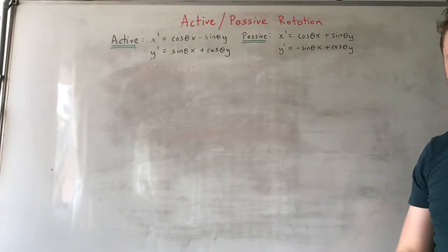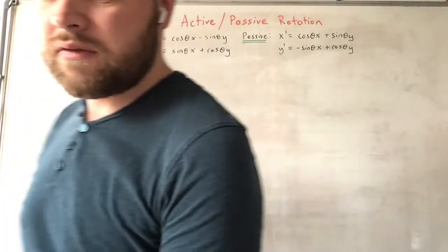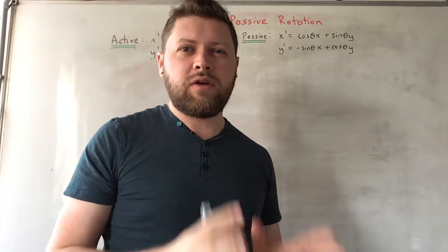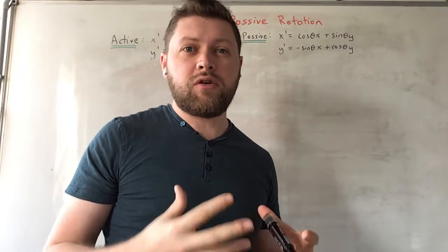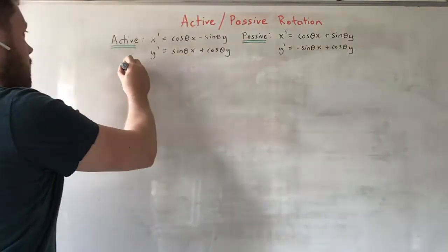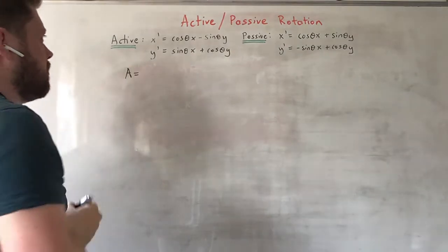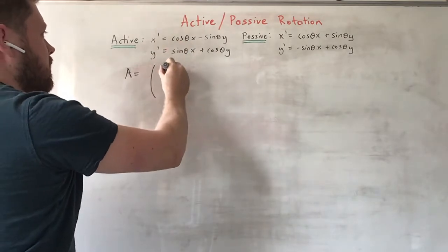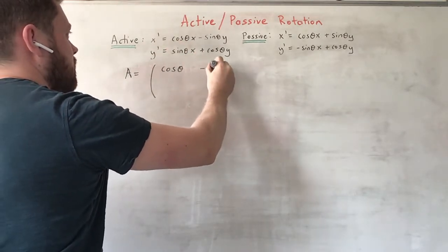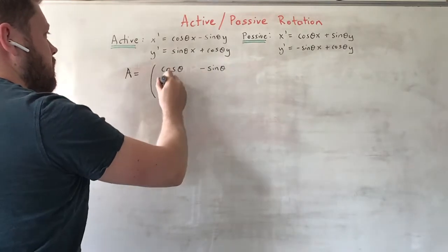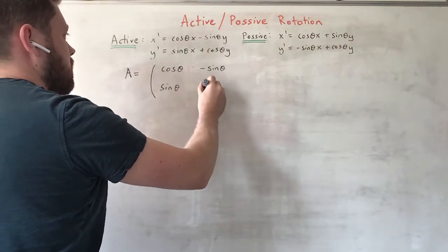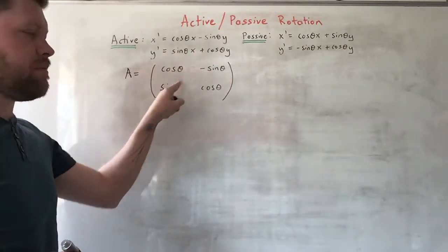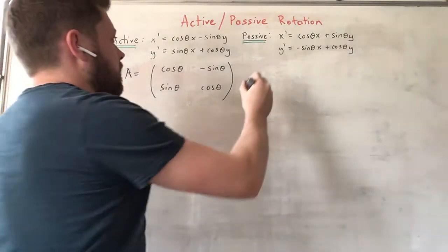I'm going to turn them into transformation matrices so you can see what they look like as matrices, and then see what happens when you combine the two. We're going to call the active transformation matrix A, and it's given by: cosine θ, minus sine θ, sine θ, cosine θ. Remember that the coefficients become your a, b, c, d entries of the transformation matrix.